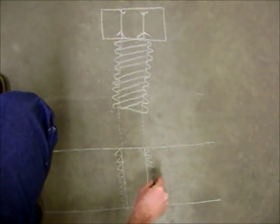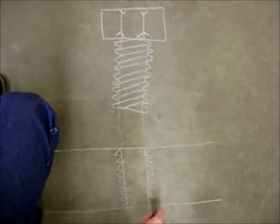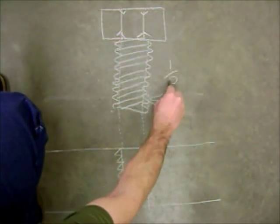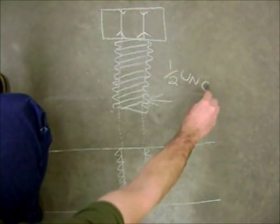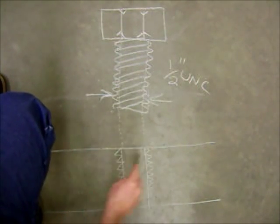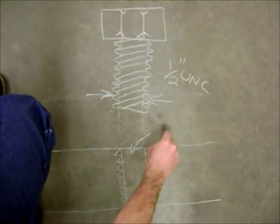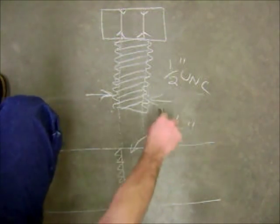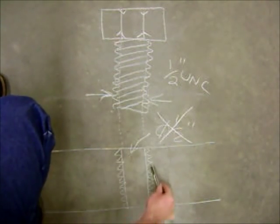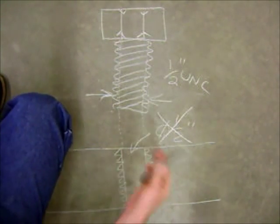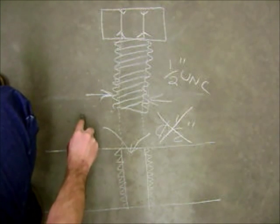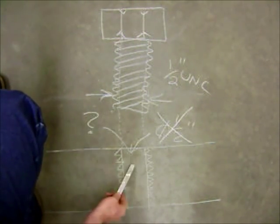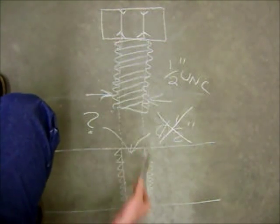If, for example, you take and measure this, let's say I want to do a half inch Unified National Course, and I measure this. If I drilled this hole a diameter of a half inch, I would be wrong because there would be nothing left to cut the threads out of. Instead, I need to find out what size does that have to be to be exactly the right hole for the exactly the right threads.